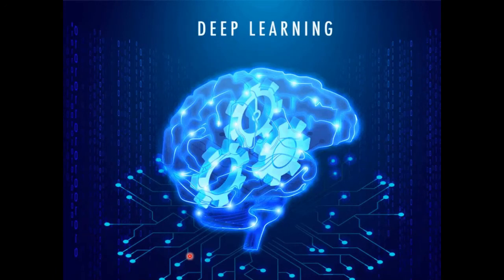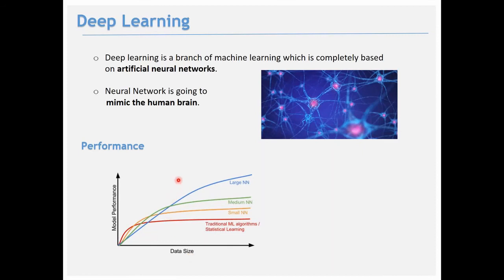Deep learning is based on artificial neural networks, inspired by the neurons in our brain. Traditional ML algorithms do not improve performance beyond a point even with more data. Neural networks overcome this: a small neural network increases performance; a medium one increases it further; and a very large neural network can increase it even more.